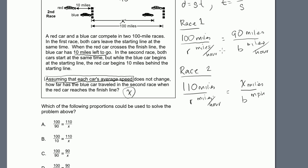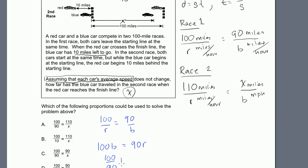We want to solve for x. If we can find an expression for the ratio between r and b, we can solve for x. From race one: 100/r = 90/b. Cross-multiplying gives 100b = 90r. Dividing both sides by 90 and then by b, we get r/b = 100/90. So the ratio of red speed to blue speed is 100 to 90.